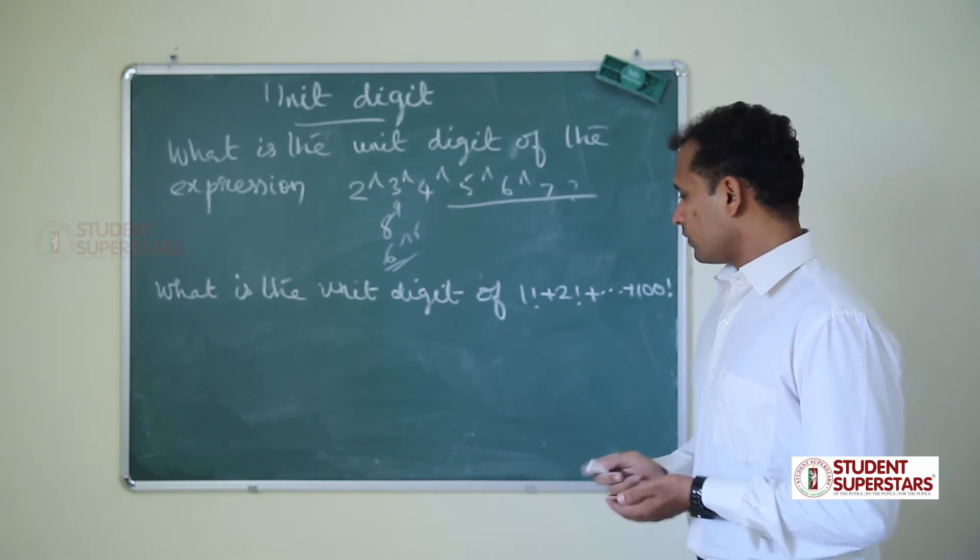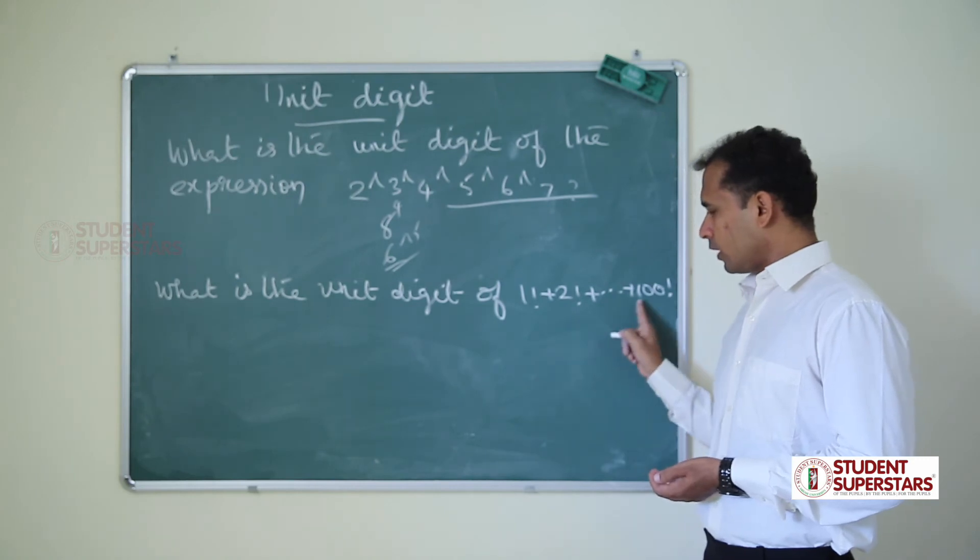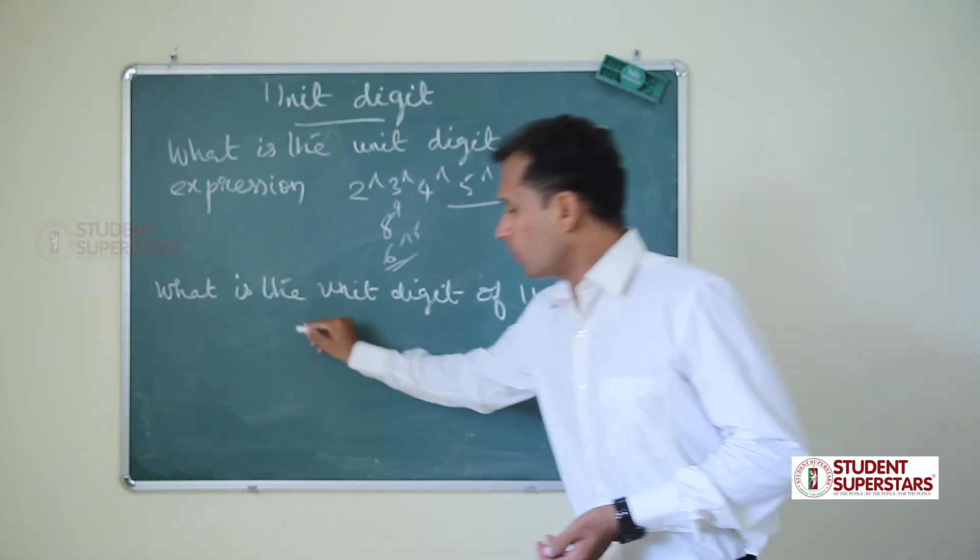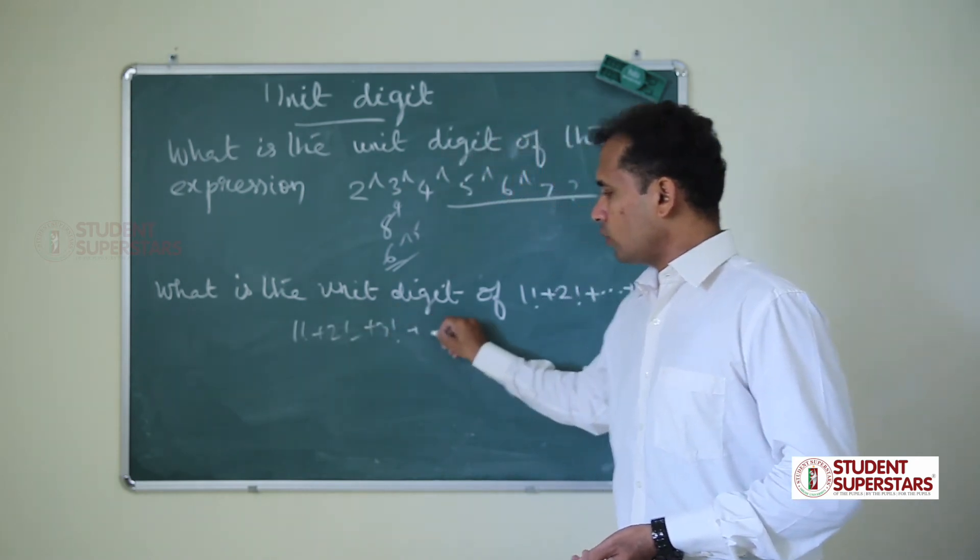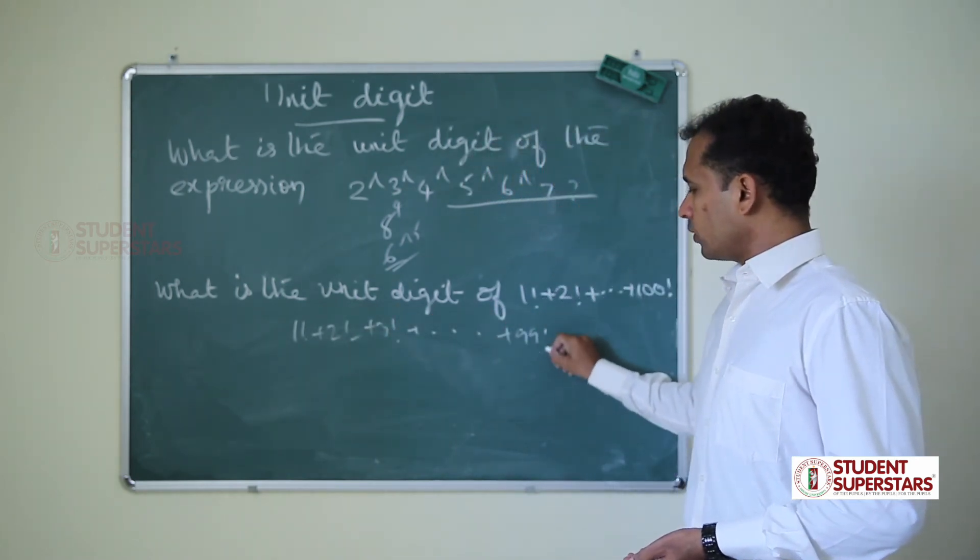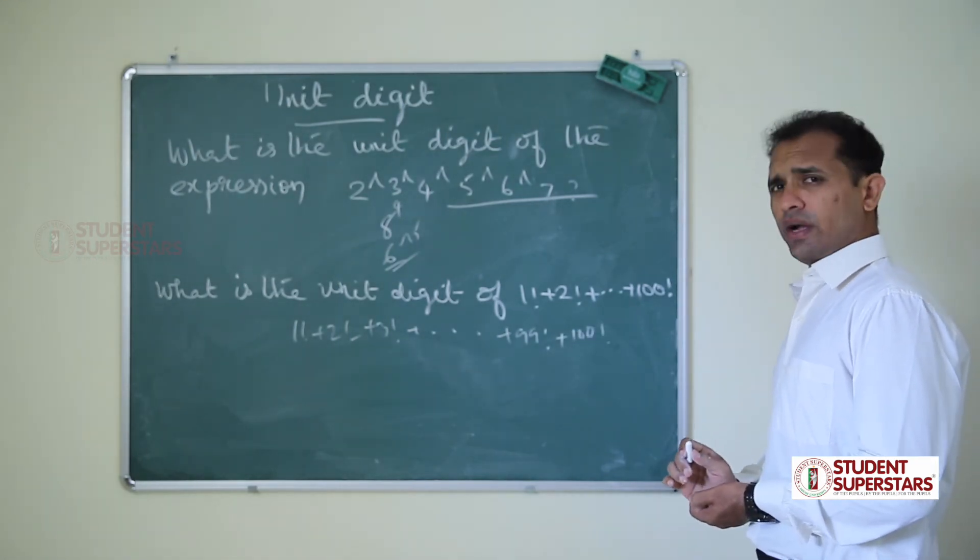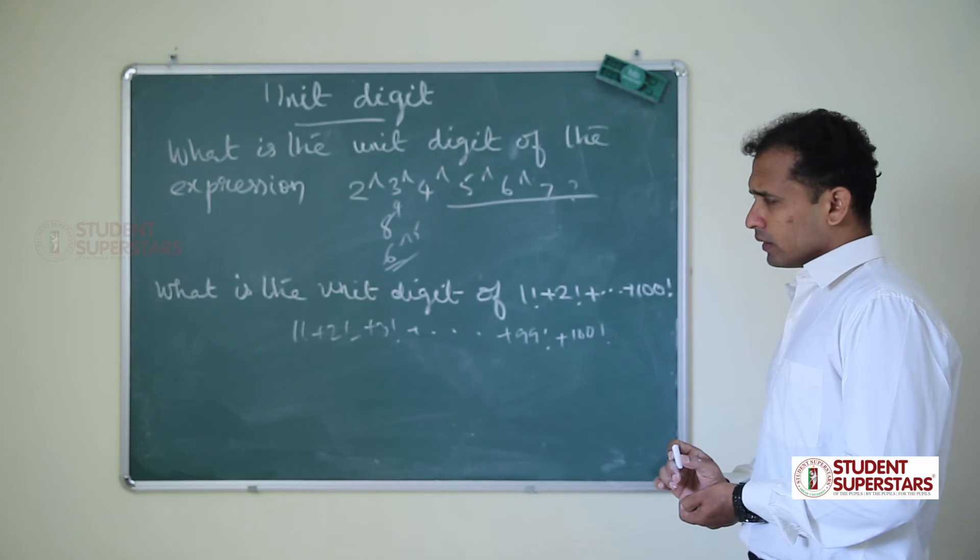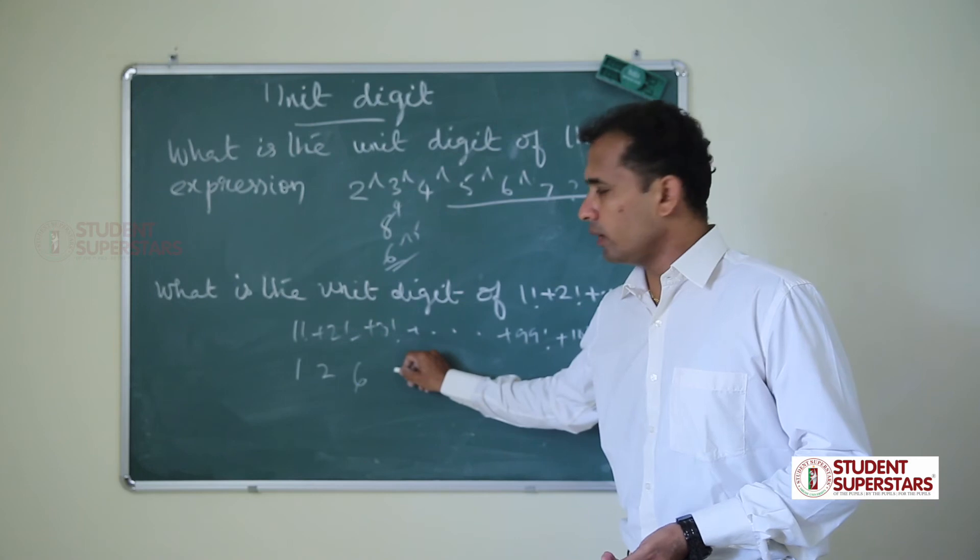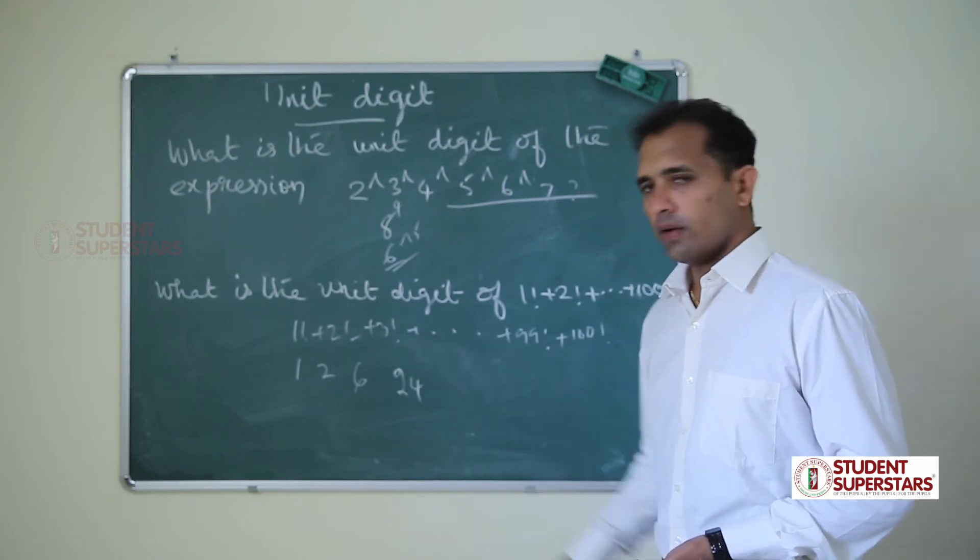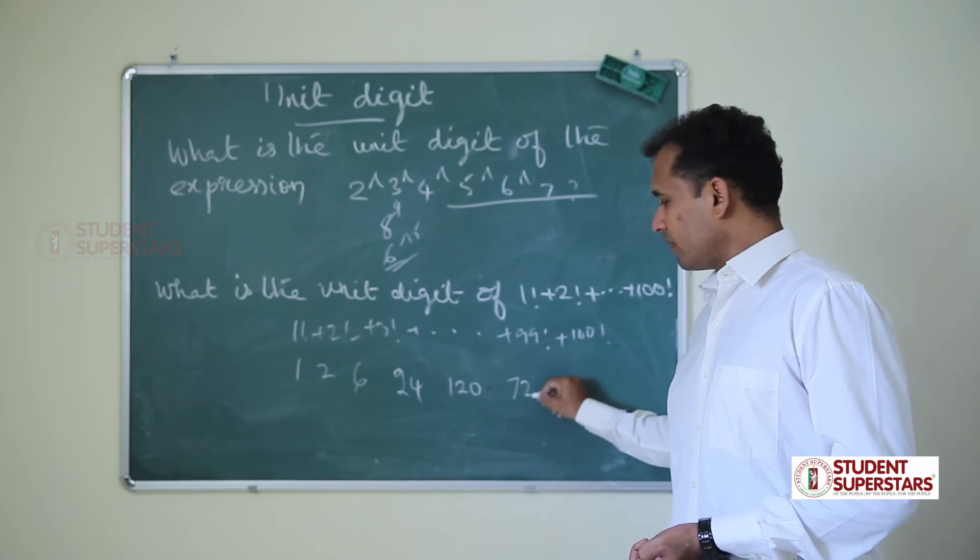What is the unit digit of this series? 1 factorial plus 2 factorial plus and so on, 100 factorial. 1 factorial is 1, 2 factorial is 2, 3 factorial is 6, 4 factorial is 24, 5 factorial is 120, 6 factorial is 720.